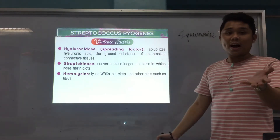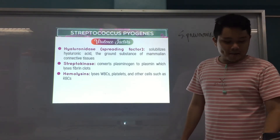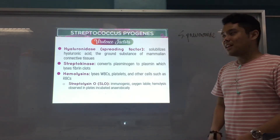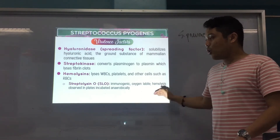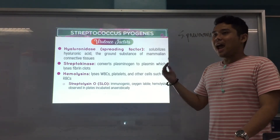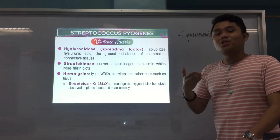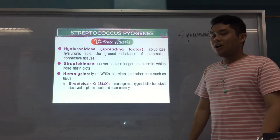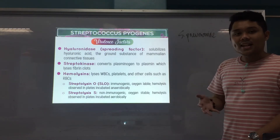Hemolysins lyse WBCs, platelets, and RBCs — that is why a hemolysis pattern is exhibited on blood agar. There are two types: Streptolysin O (SLO), which is heat-labile and oxygen-labile, and is the hemolysin observed in plates incubated anaerobically. Importantly, SLO is immunogenic — meaning it elicits an immune response.